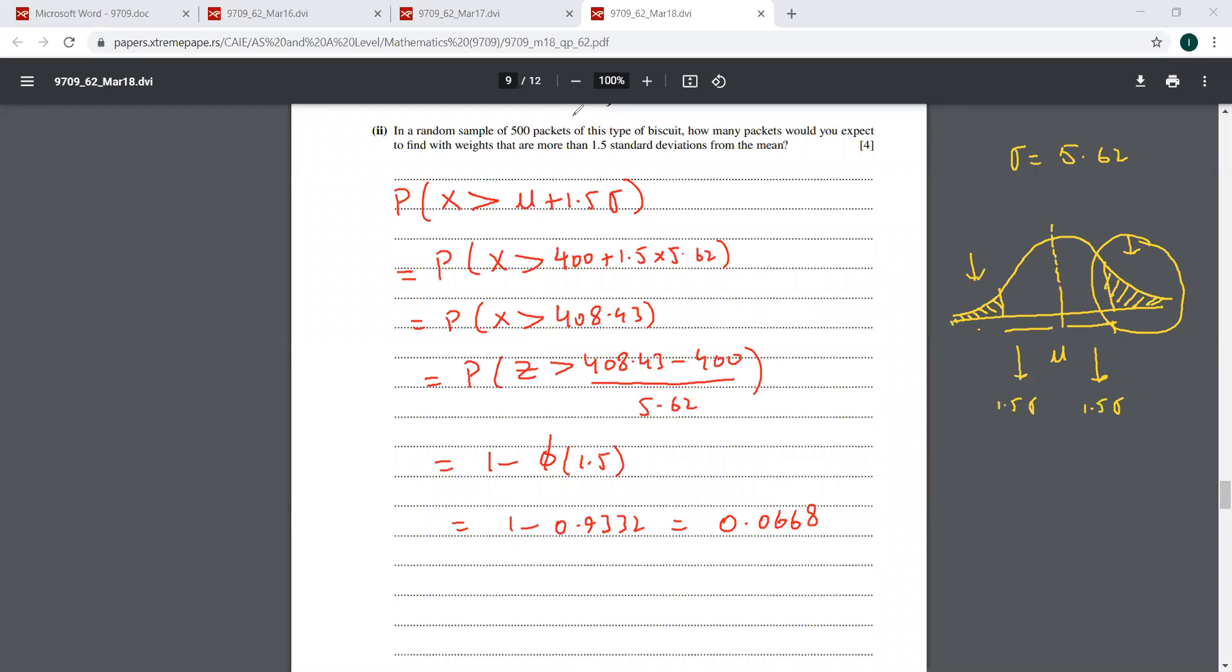Now we have 500 packets. So the number required, he was asking how many of the packets. So you multiply this with the probability 0.0668 times 500. This is 33.4.